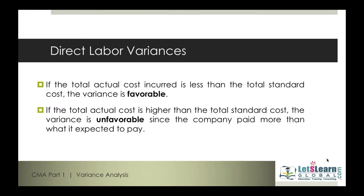We look at what number of hours for skilled, semi-skilled, and unskilled workers are supposed to be used versus the actual mix of laborers used — that's the mix variance. And given a standard mix of labor hours, what work should have been completed versus what actual work is completed gives us the direct labor yield variance.